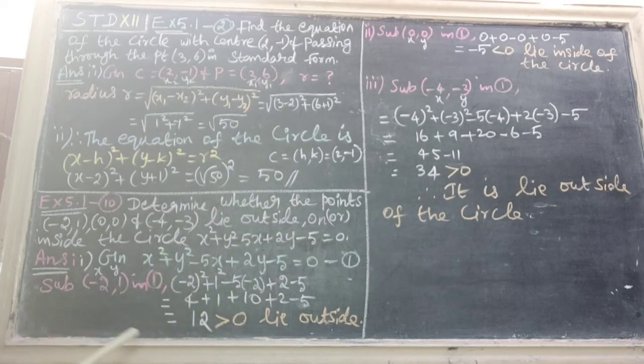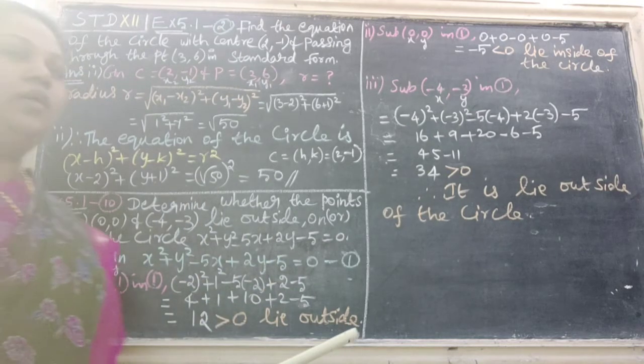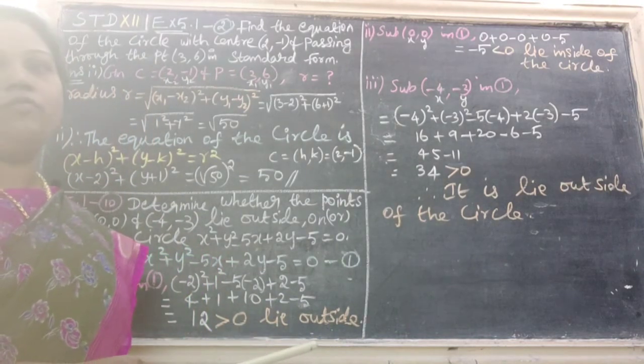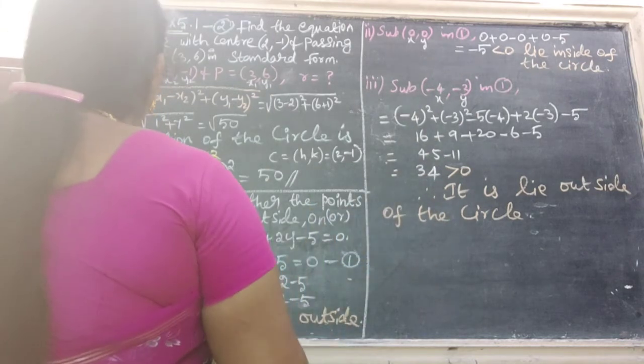We take minus 2 as x and 1 as y. Substitute and we get 12. 12 is strictly greater than 0, therefore it lies outside of the circle. Next point is 0 comma 0.